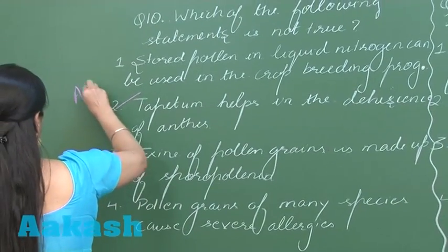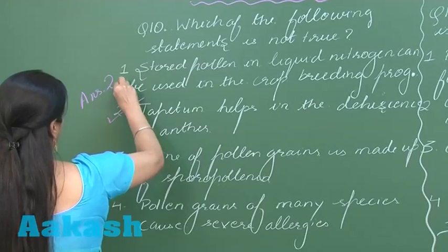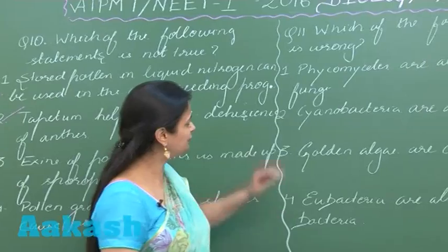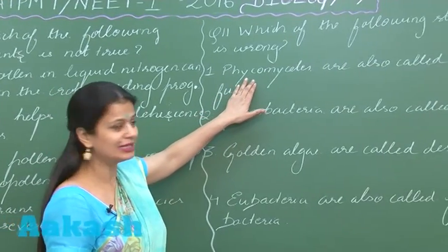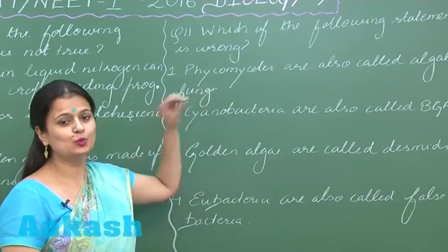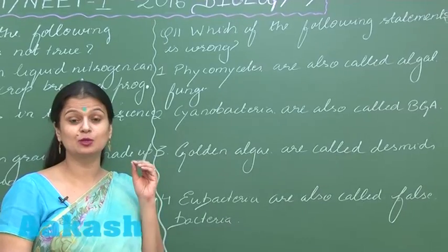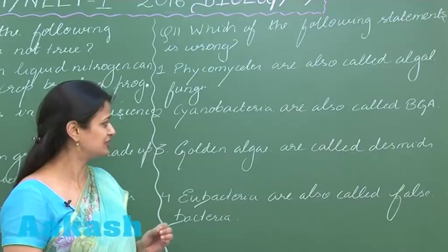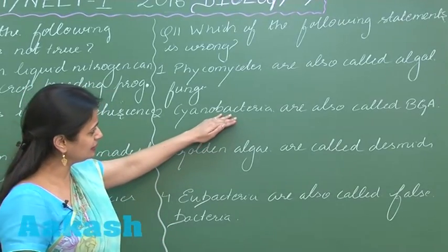Again, we have to look for a wrong option here. Phycomycetes are also called algal fungi. Why algal fungi? Because the wall is made up of cellulose, not chitin. Cyanobacteria are also called blue-green algae. That's again right.